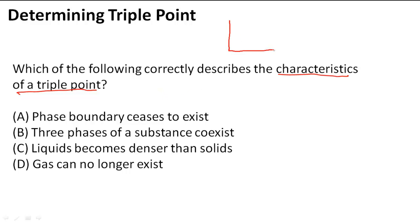That if I were to draw the phase diagram right here, they're talking about this point right here. So what does that point really mean? Does it mean that the phase boundary ceases to exist, the three phases of matter that it describes coexist, liquids become denser than solids,